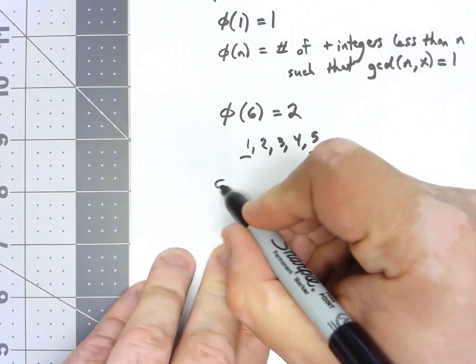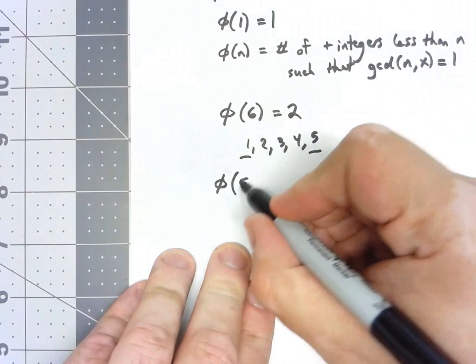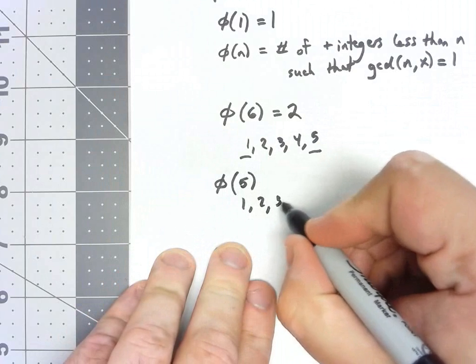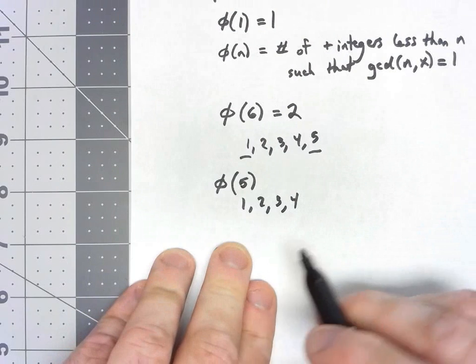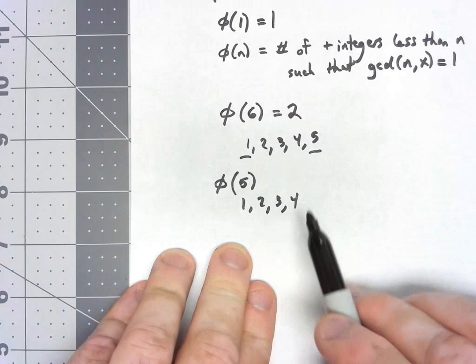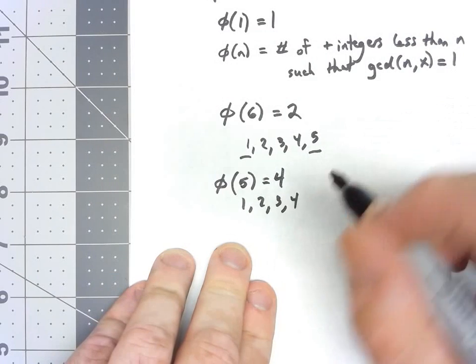If I wanted to figure out φ(5), there are only four possibilities: 1, 2, 3, and 4 that are less than it. And since 5 is prime, all of those have to be relatively prime to it. So φ(5), there are four numbers.